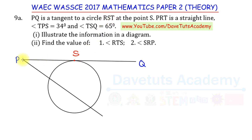We have already defined S along line PQ. Now we need R and T. Since PRT is a straight line and R and T are both on the circle, the line from P passes through R on the circle and exits at T. So this point on the circle is R, and the other point where the line exits the circle is T. We can verify: PQ is tangent to circle RST at point S, and PRT is a straight line.